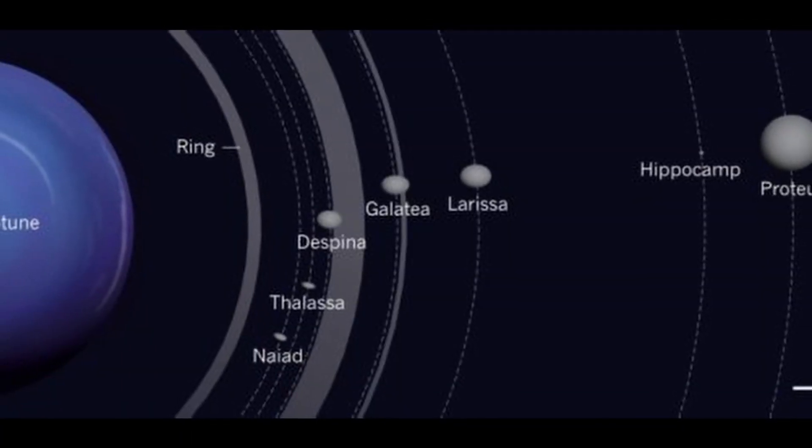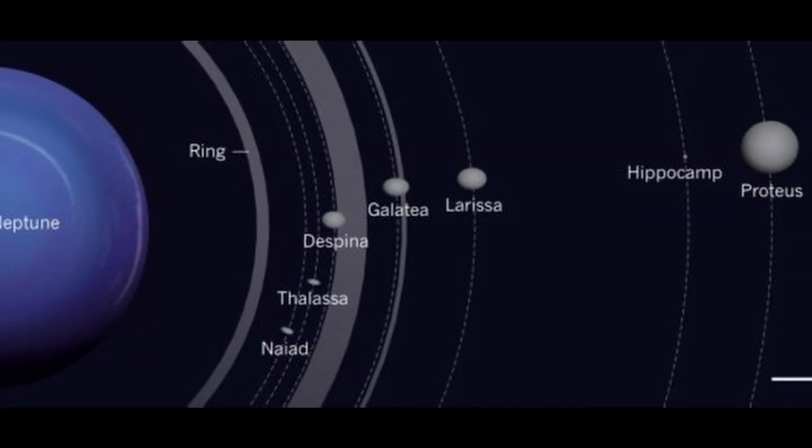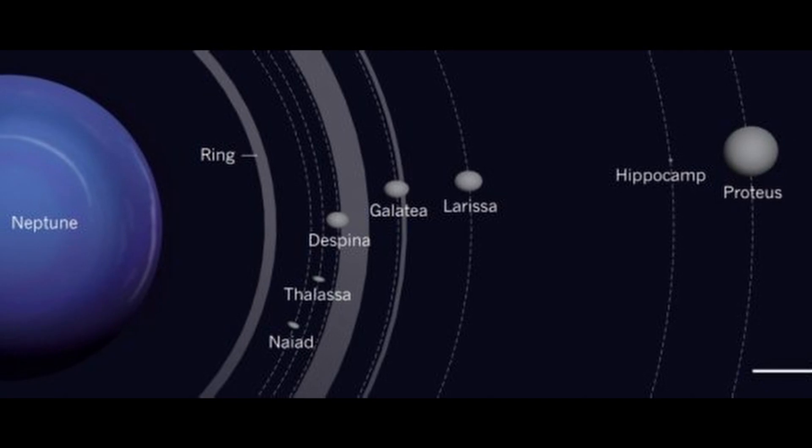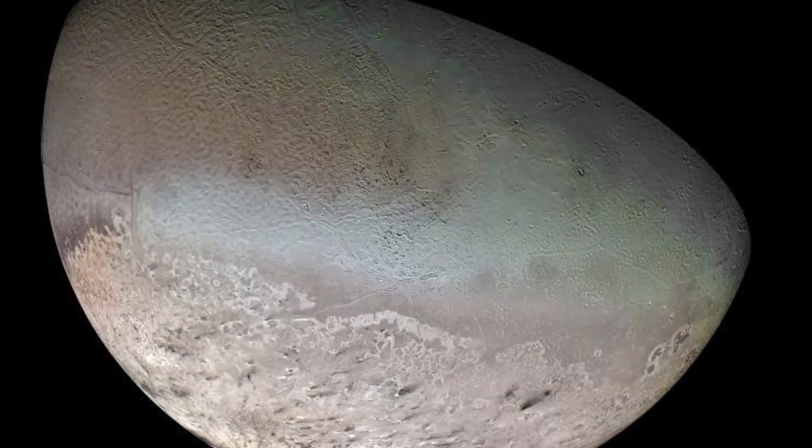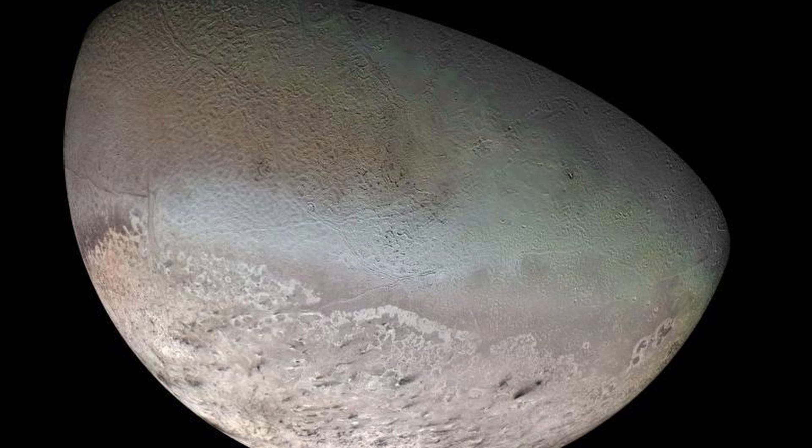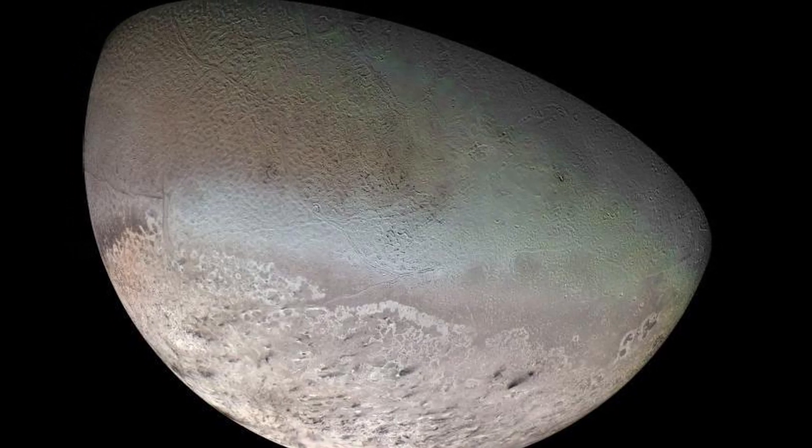Neptune has 13 moons, which are named after sea gods and nymphs in Greek mythology. The largest Neptunian moon, Triton, was discovered just 17 days after Neptune itself was discovered.